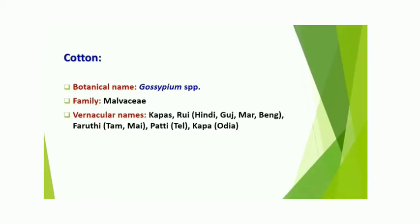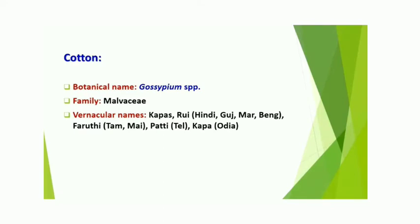First, cotton. The botanical name is Gossypium species — there are many species such as Gossypium herbaceum and Gossypium arboreum. It belongs to the family Malvaceae. There are many vernacular and common names in various languages.